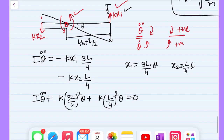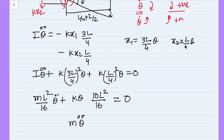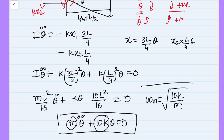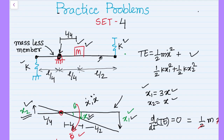Simplifying yields mL²/16 · θ̈ plus the restoring moment terms equal zero. The natural frequency from Newton's approach is also ωn = √(10k/m), which matches the energy approach result exactly. Both the energy method and the force method give the same natural frequency and governing equation of motion for this system.